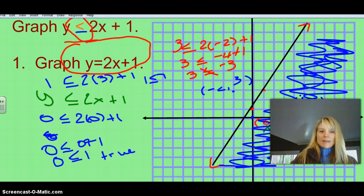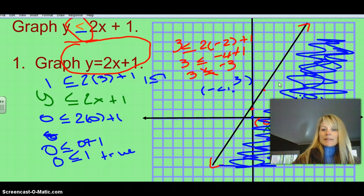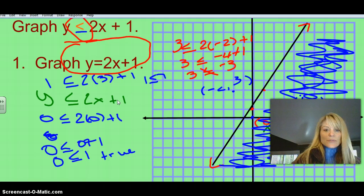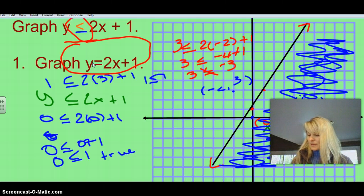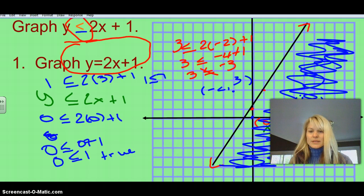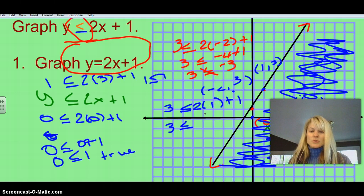One point I forgot to make is this has an equals to sign. So we drew a nice solid line. And the reason we did that was because all the points on this line are true for this equation also. So if we took a point right on this line, let's say we took point 1, 3, and we plugged it in. So we plug in 3 for y and 1 for x. We would have 3 is less than or equal to 2 times 1, which is 2, plus 1 is 3. And is 3 less than or equal to 3? And the answer would be yes. It's equals to, so that's true. So all the points on here are true as well.